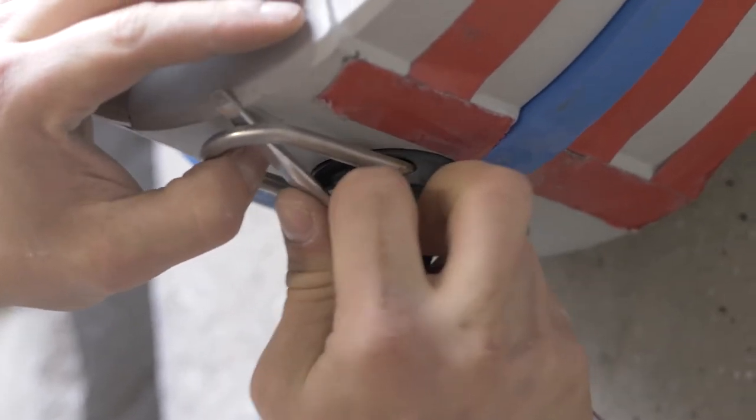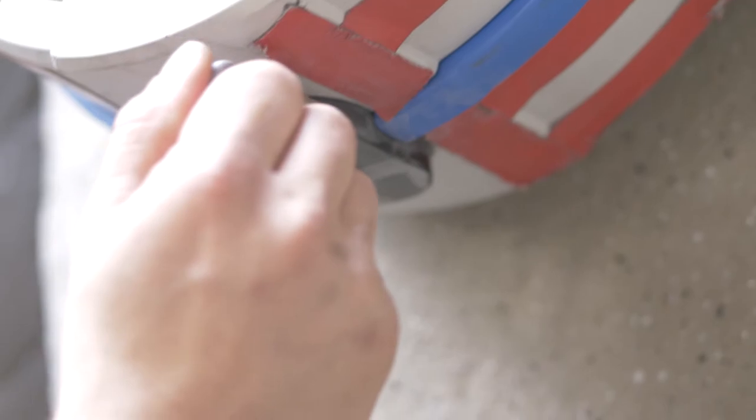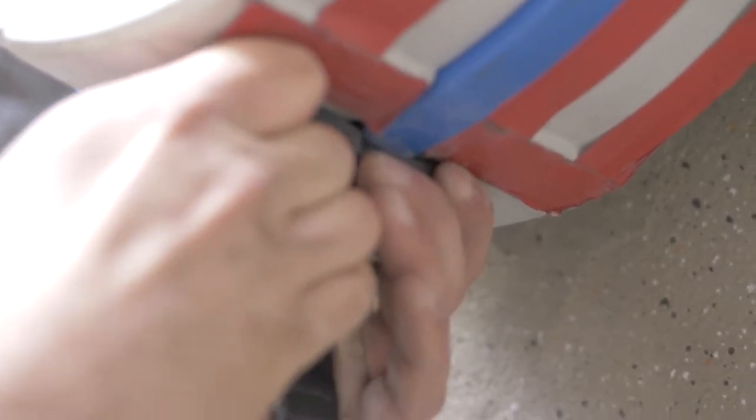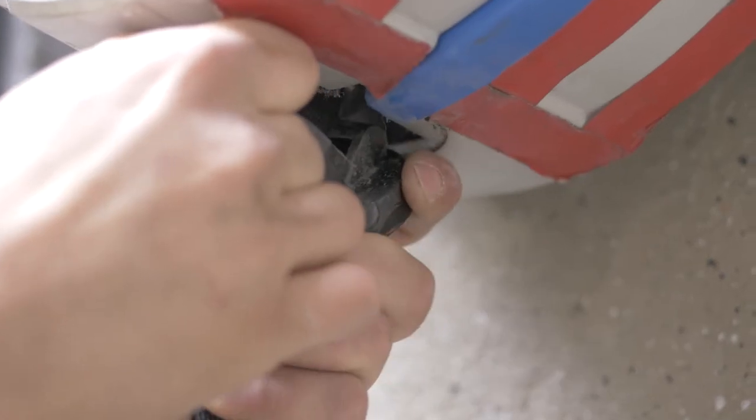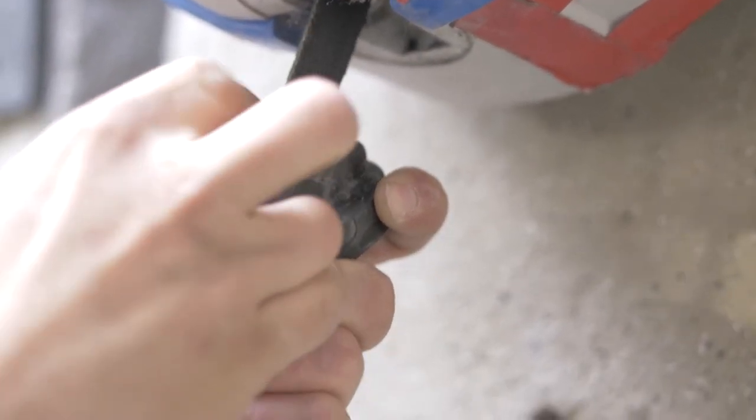Carefully remove the nozzle clip like this. Once removed, insert that nozzle clip into the center of the nozzle and you can even use it to pry off the nozzle pieces.